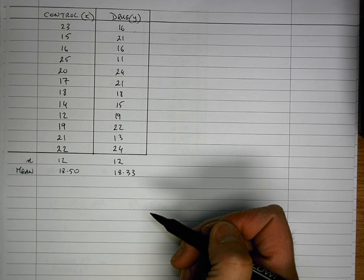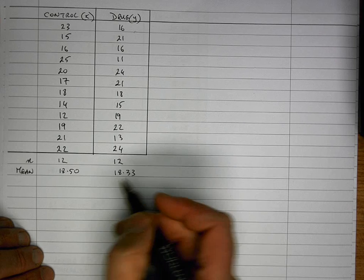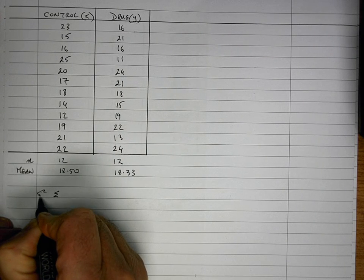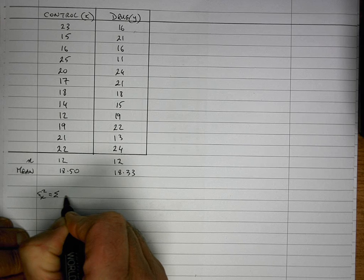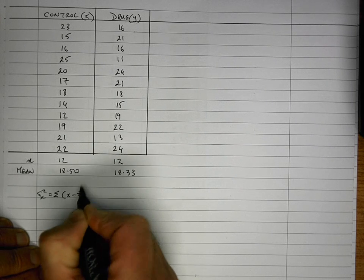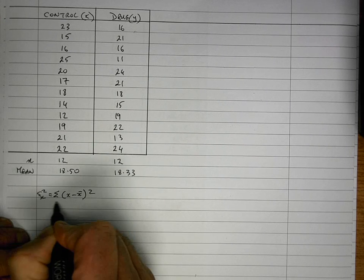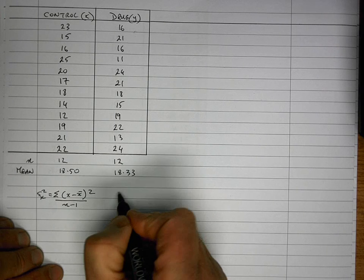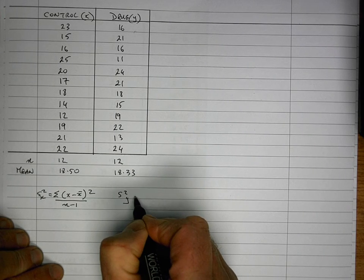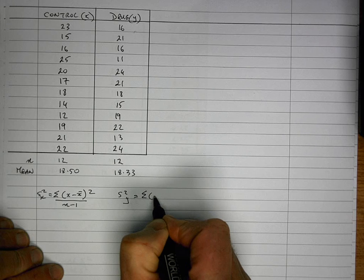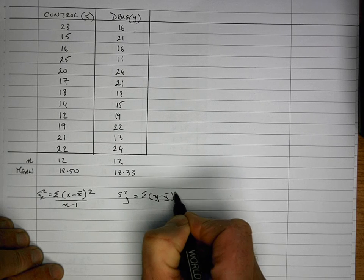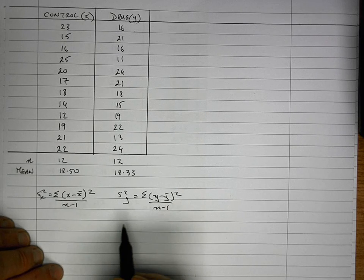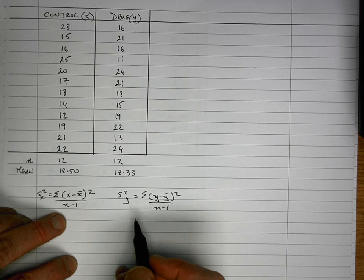So now we need to determine the variance of the two groups as well. So to do that, I need my formulas. So the variance of the group x is equal to the sum of x minus x bar, so that's the mean we've just calculated, squared, divided by n minus 1, n is 12. And the variance s squared of the y group is equal to the sum of all of the y minus y bar, squared, divided by n minus 1. So let's go ahead and quickly calculate these two variances here.